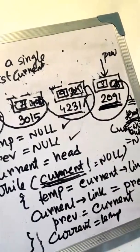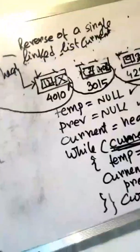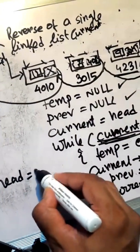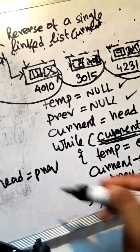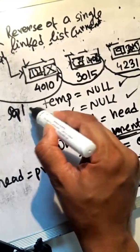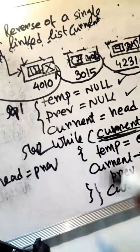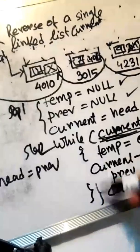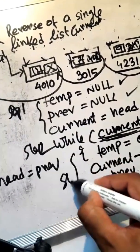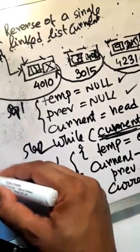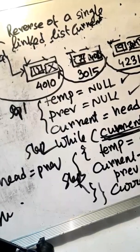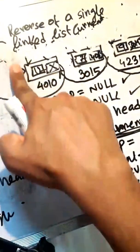On the last step, the head pointer is assigned the previous node. Step 1, step 2, step 3, step 4, step 5, and exit. The algorithm steps are complete.